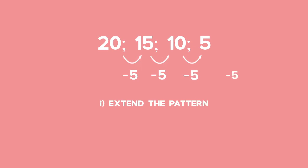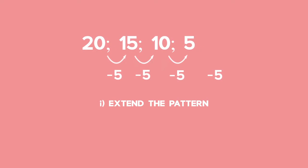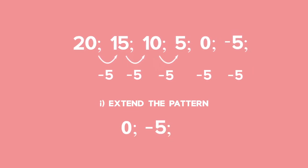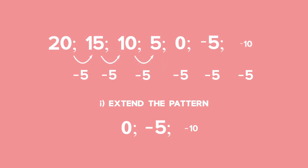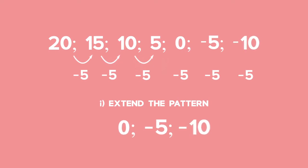5 minus 5 will give us 0. Then subtracting 5 from 0 gives us negative 5, and again subtracting 5 gives us negative 10. These are the next three terms in this number pattern.